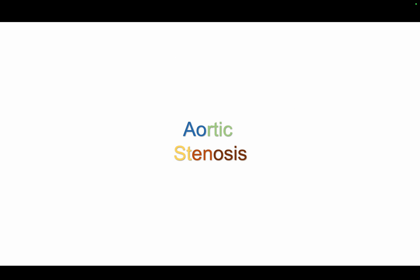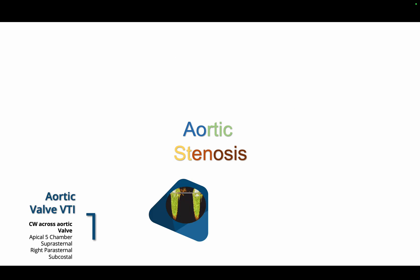I'm going to take you through the assessment of aortic stenosis and the eight parameters you must take. Parameter one: take the aortic valve VTI — the CW Doppler across the aortic valve via the apical five-chamber view, suprasternal, right parasternal, or subcostal view. We are looking for the peak gradient — the maximum — and we mention in our report where we took the velocity for subsequent follow-up.